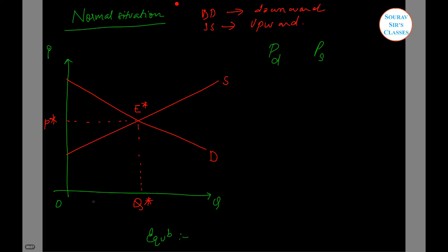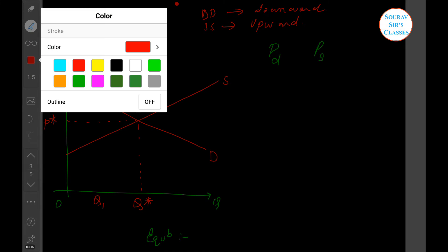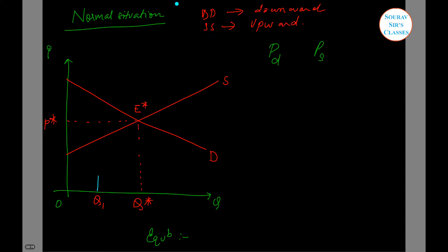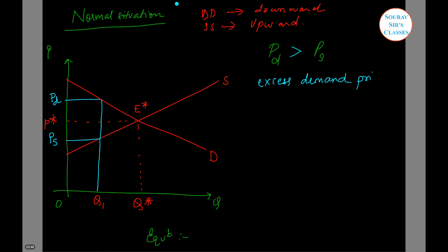Say in the market the quantity is OQ1. Given this, we will have a demand price PD and a supply price PS. We can see that the demand price is greater than the supply price, so there is a situation of excess demand price. Sellers will react to this by actually increasing the quantity of output Q.